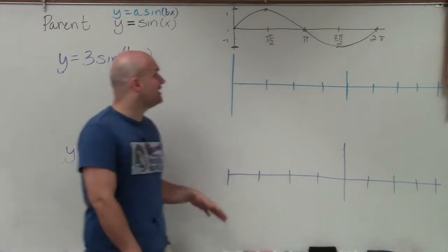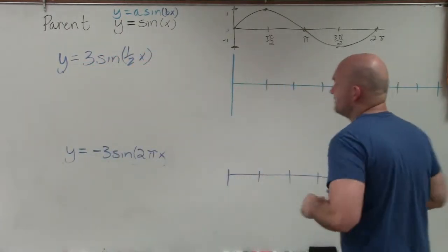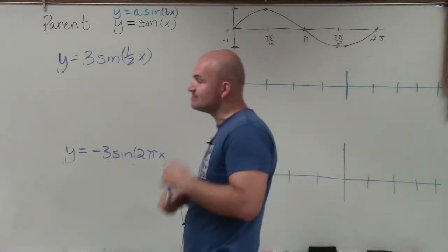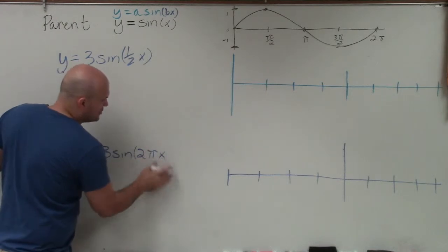Welcome, ladies and gentlemen. What I'd like to do is show you how to graph our two functions. When given here, we have some transformations. Here, I have y equals 3 times sine of 1 half x. And also, I have y equals negative 3 sine of 2 pi x.